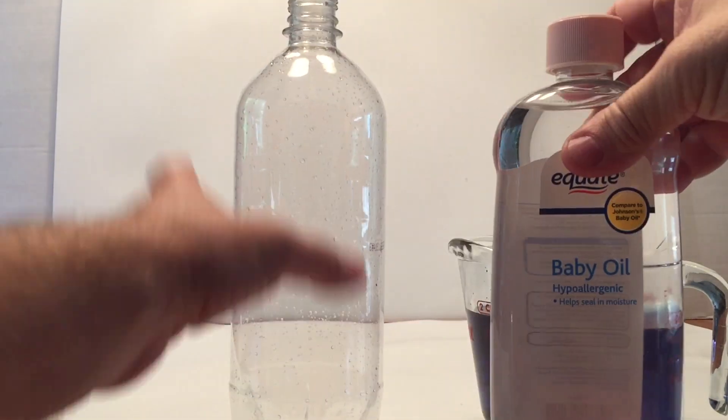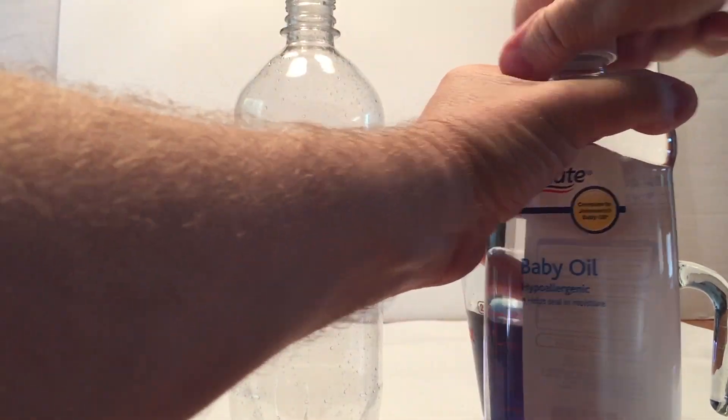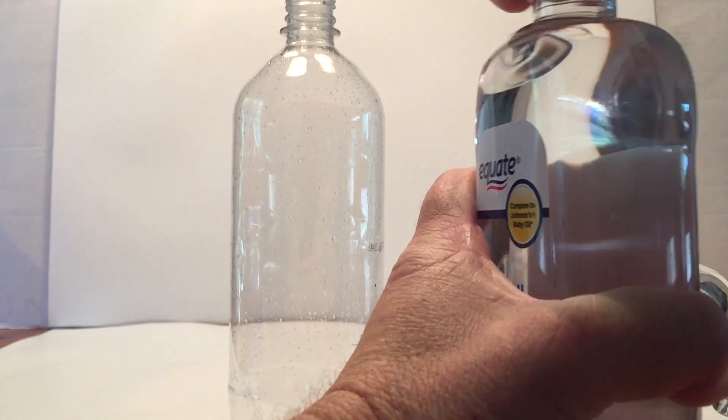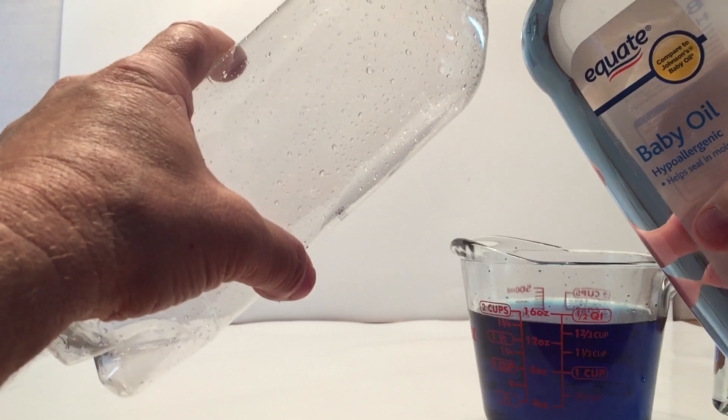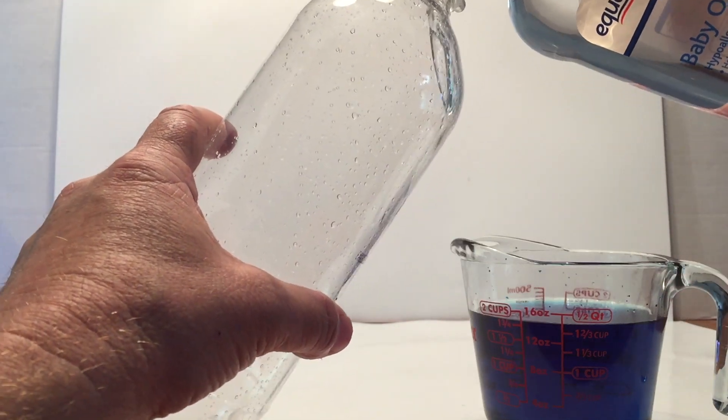Then you take the baby oil, which is baby-proof, so it takes a little while to open it up because they don't want babies to get into it. Once you get that in, you're going to pour that in first, about two-thirds all the way full.